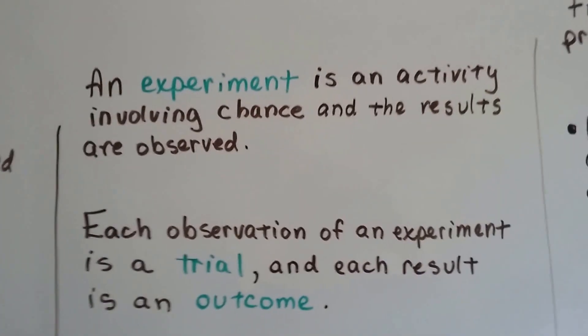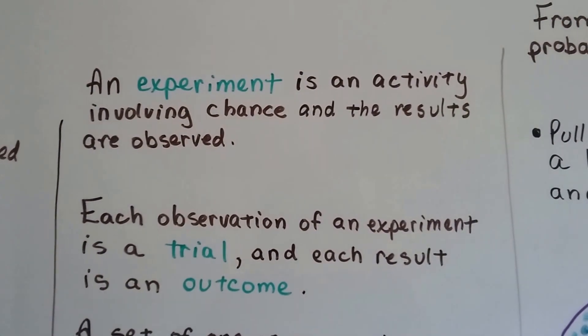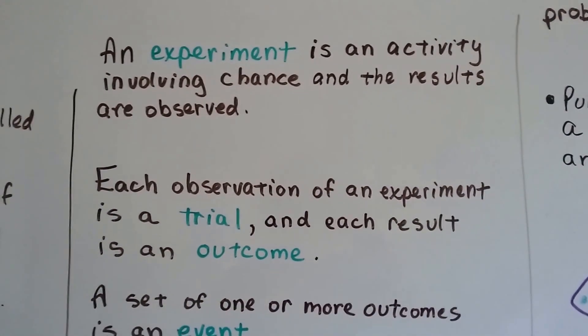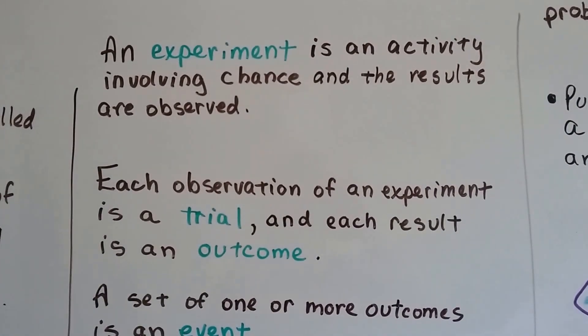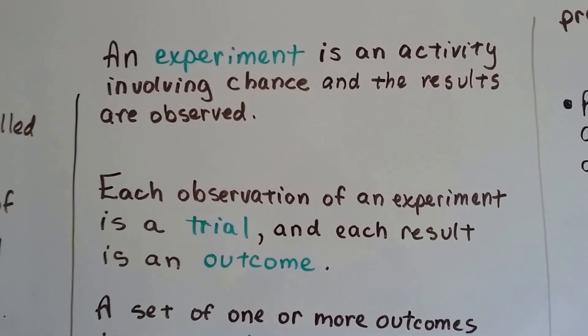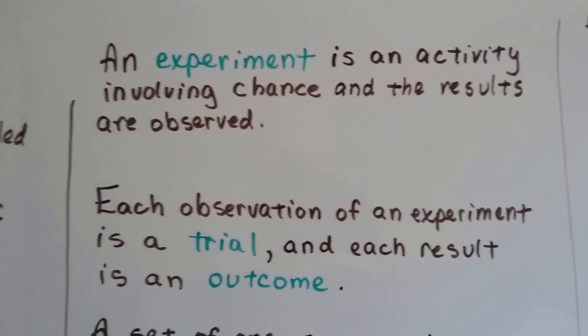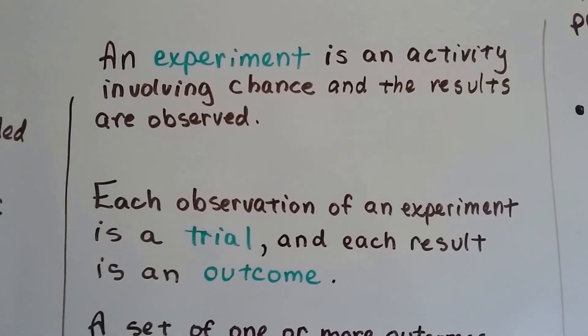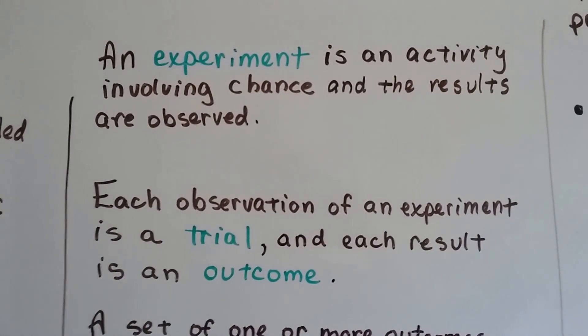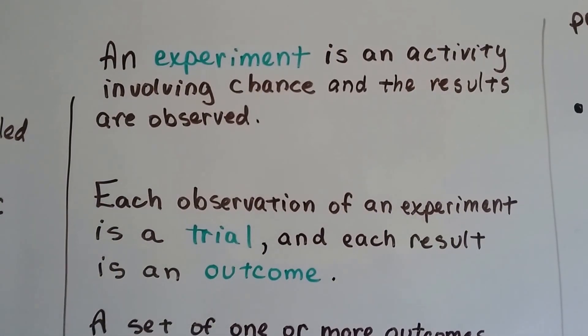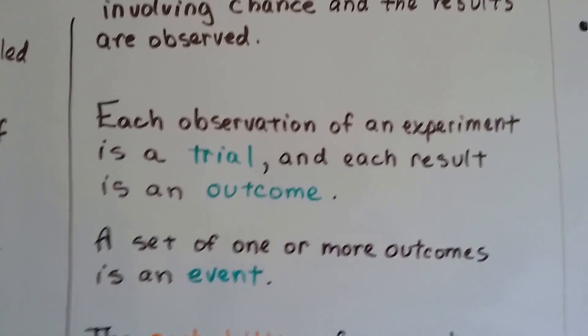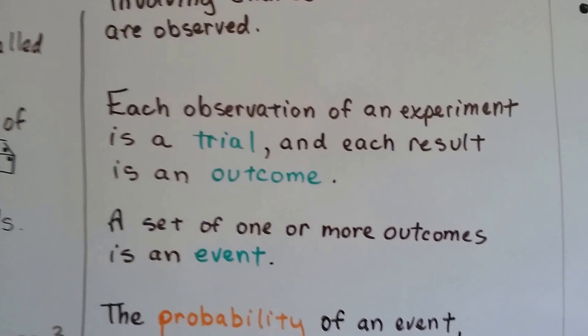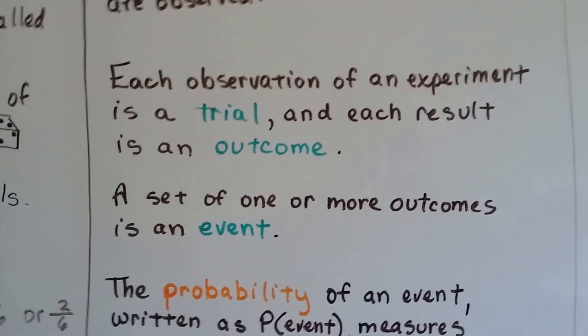An experiment is an activity involving chance, and the results are observed. Each observation of an experiment is a trial, and each result is an outcome. You ever hear of medical trials where someone has medicine tried on them, and then they watch to see if it works because it's not on the market yet? That's the same thing. A set of one or more outcomes is an event. So if you do several trials and outcomes, then it would be an event.